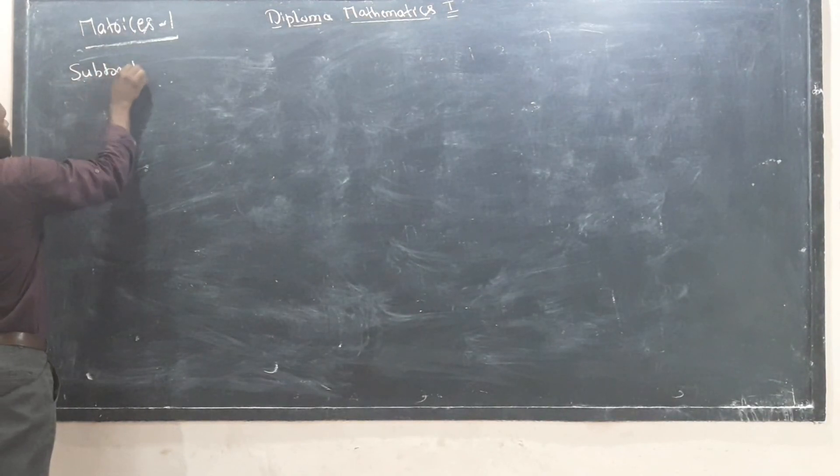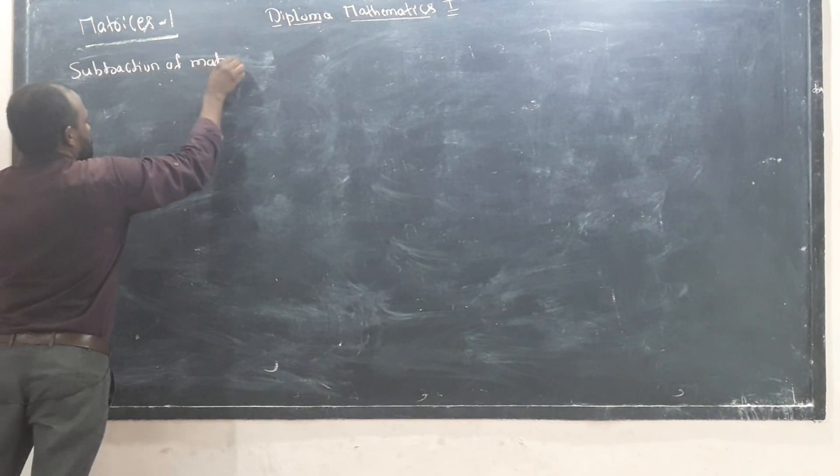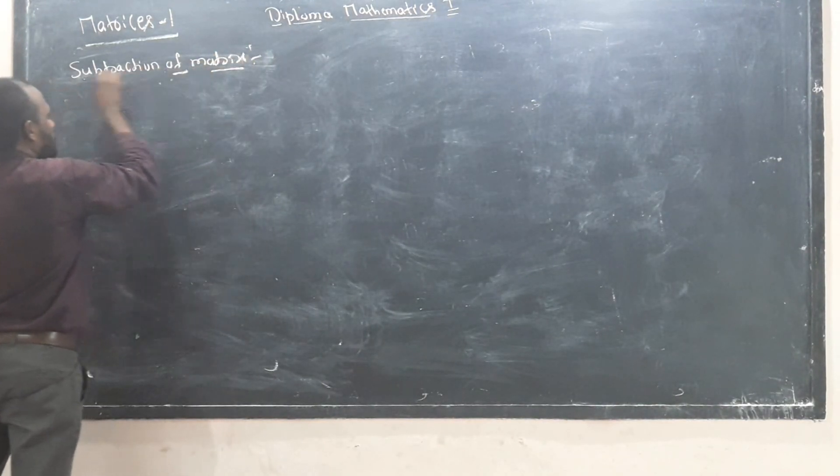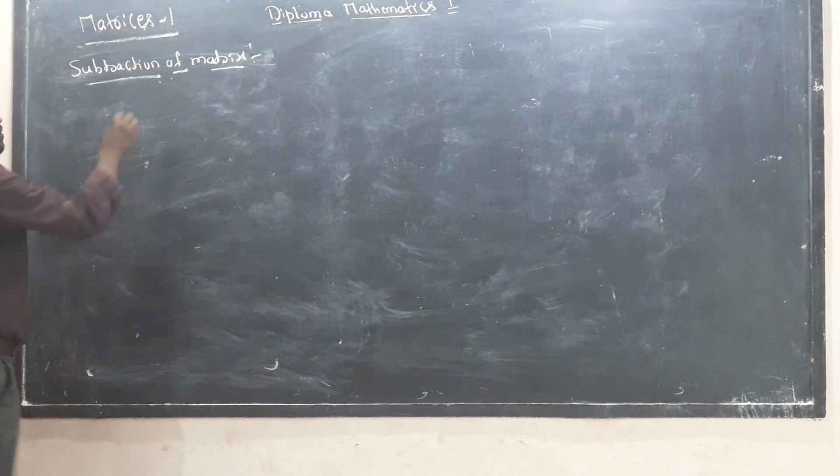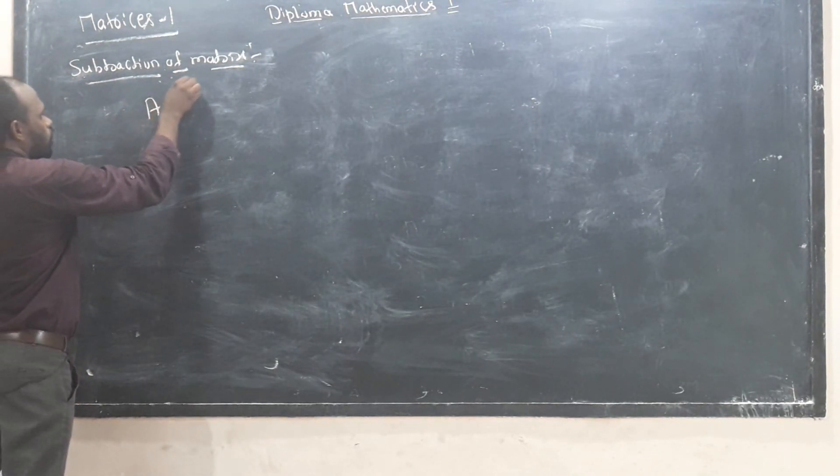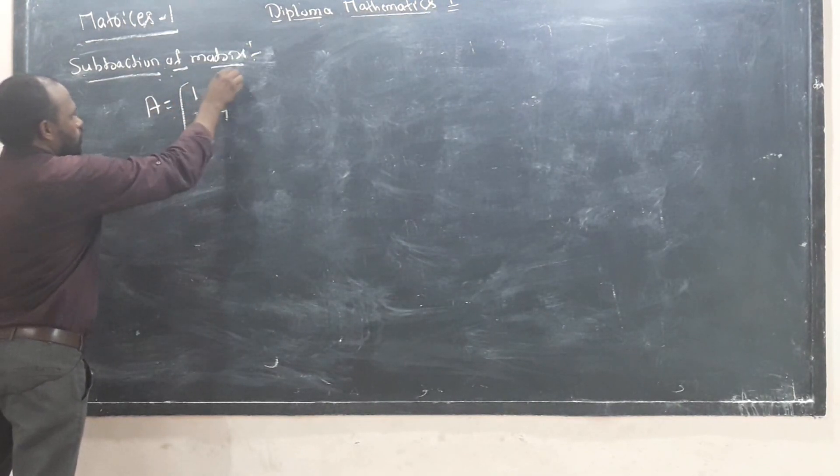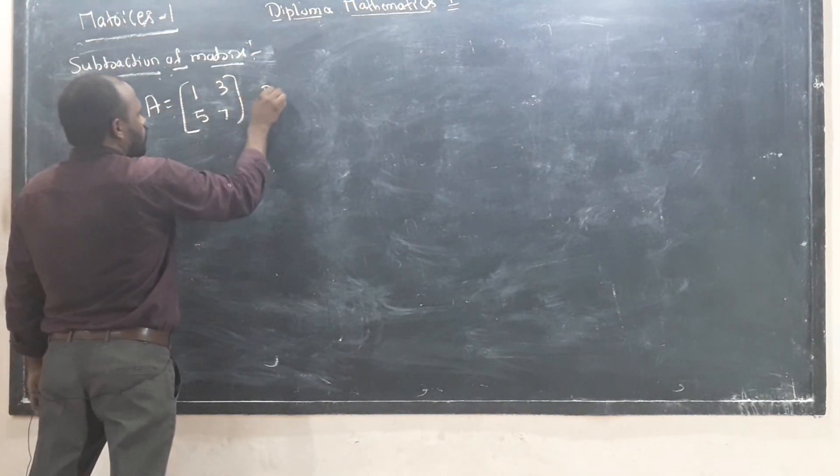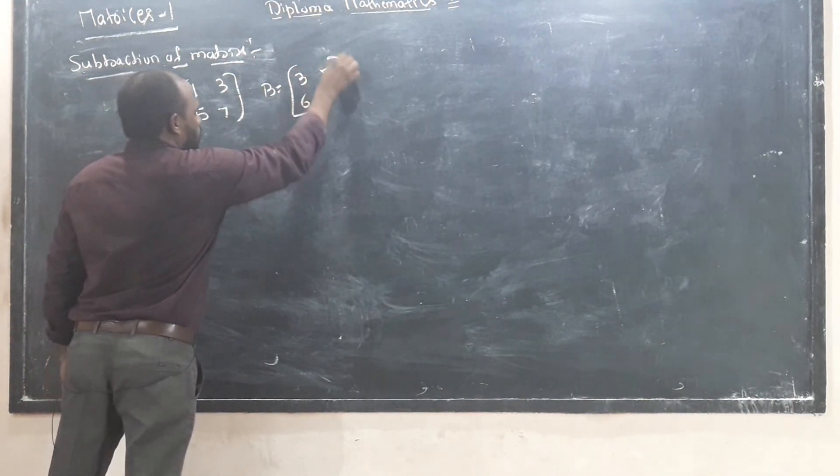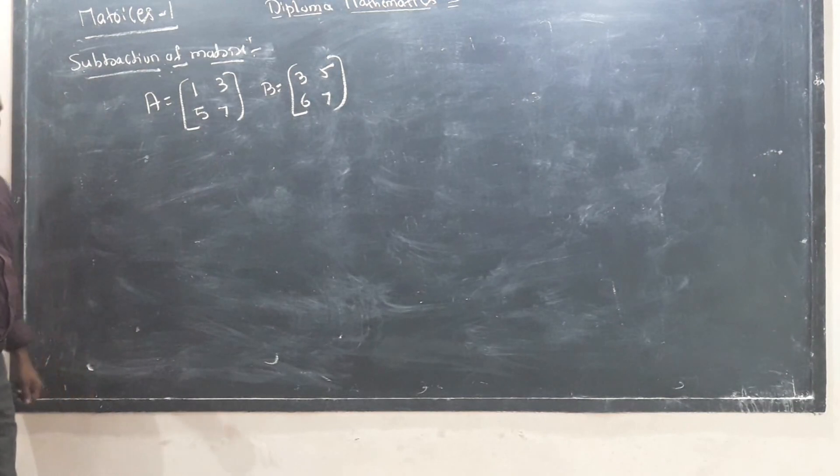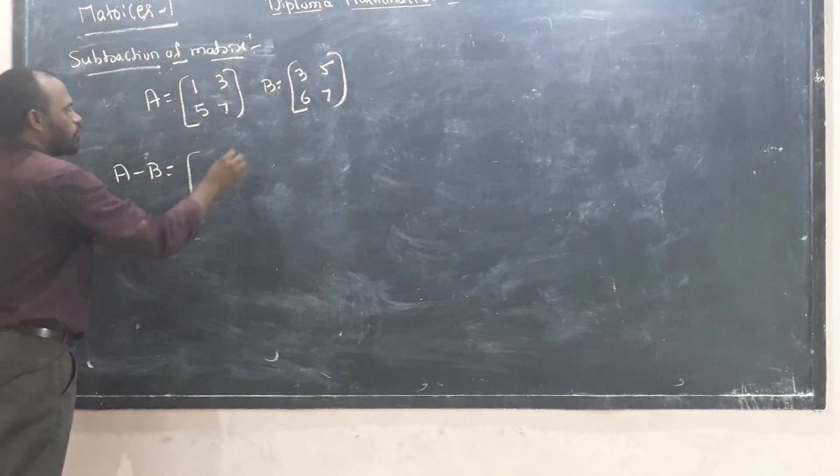Subtraction of matrix. Now, suppose A is equal to 1, 3, 5, 7 and B is equal to 3, 5, 6, 7. We need to find A minus B.